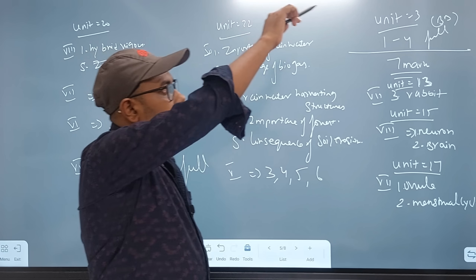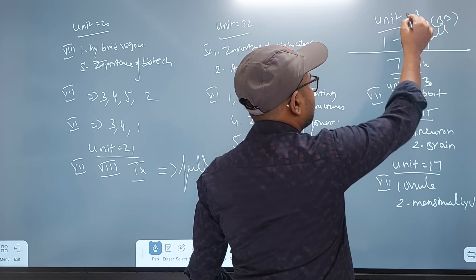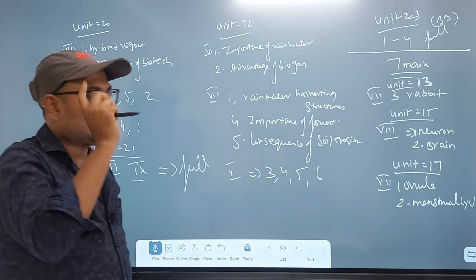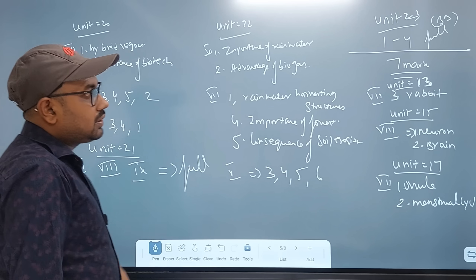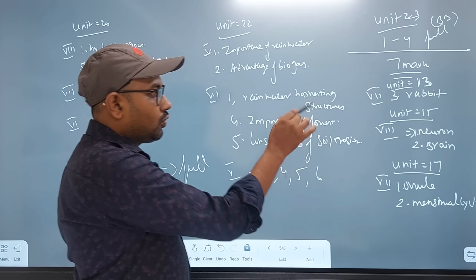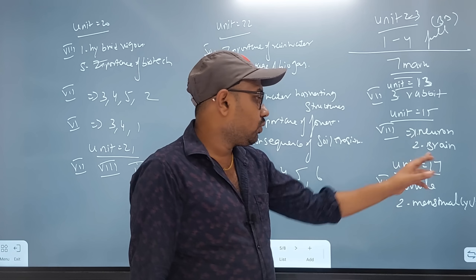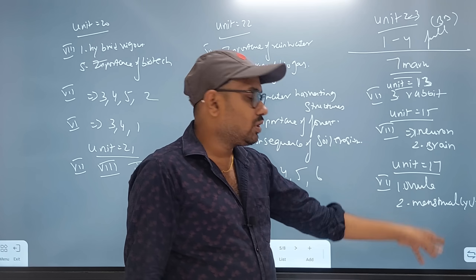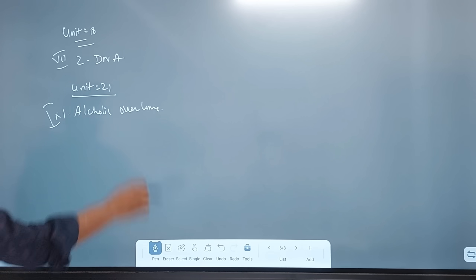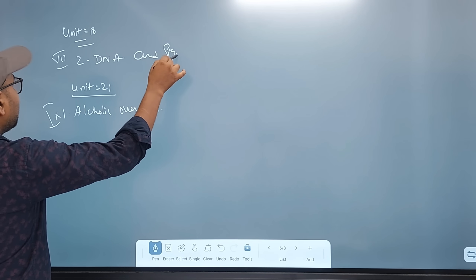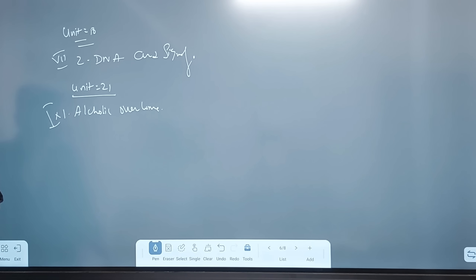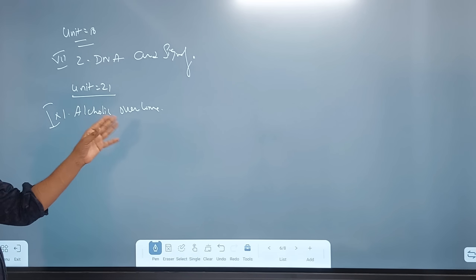Unit 23 is from the book back. Book back is 4 marks, 2 marks. This is biology. Unit 13 is the Rabbit Male Reproductive System. Unit 15 is Neuron and Brain. Unit 17 is Ovule and Menstrual Cycle — 1 tone. Unit 18 is DNA and its Significance. Rome number 7 is the second one. Unit 21 is the second one, Rome number 9 is the first one. All of these are 2 marks.